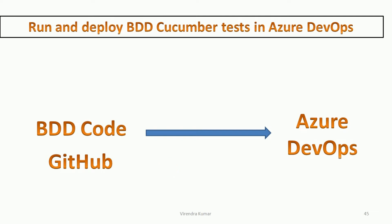Hello guys, welcome back. This is Viran Kumar. In this series of Azure DevOps, I am going to show how we can run and deploy BDD Cucumber tests in the Azure DevOps Pipelines. If you are working with the BDD Cucumber Automation Framework and want to explore Azure DevOps Pipelines with the BDD Cucumber Framework, then you will get the idea from this video series. Please like and subscribe this channel.